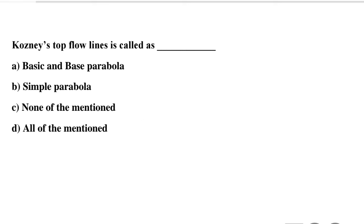Question 13: Cozeny's top flow line is called — Option A: basic parabola and base parabola, Option B: simple parabola, Option C: none of the above, Option D: all of the above. The correct answer is Option A: basic and base parabola.